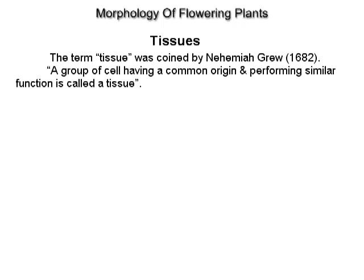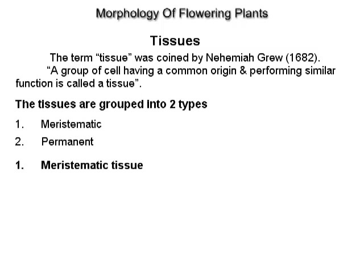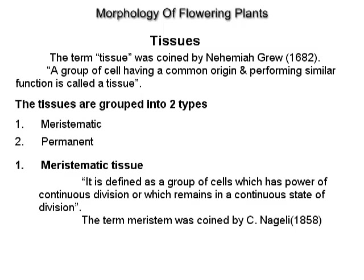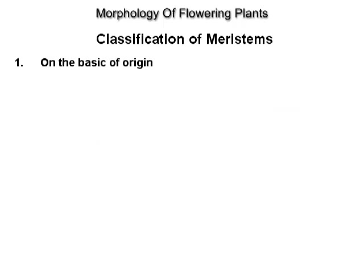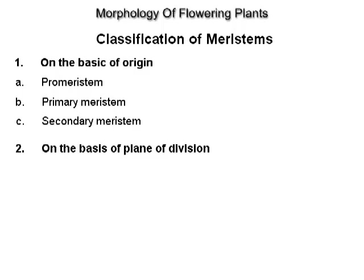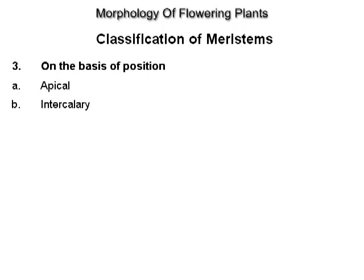Tissues. The term tissue was coined by Nehemia Grew in 1682. A group of cells having a common origin and performing a similar function is called a tissue. Tissues are grouped into two types: meristematic and permanent. Meristematic tissue is defined as a group of cells which has the power of continuous division. The term meristem was coined by C. Nageli in 1858. Classification of meristems: on the basis of origin — pro meristem, primary meristem, secondary meristem; on the basis of plane of division — rib meristem, plate meristem, mass meristem; on the basis of position — apical, intercalary and lateral.